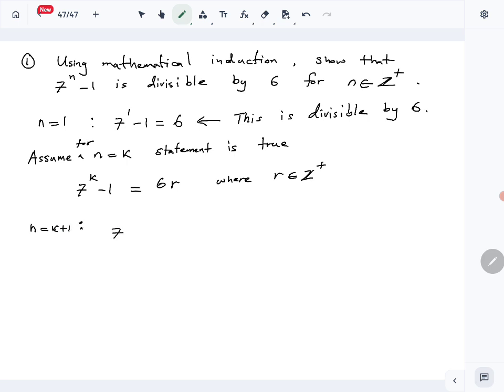What is the statement for n = k + 1? 7^(k+1) - 1. This expression we need to show is divisible by 6. Let's break this term into two terms using the exponent, so we have 7^k times 7^1 - 1.